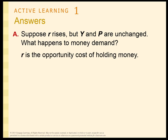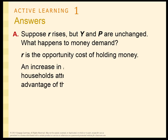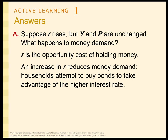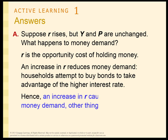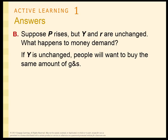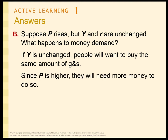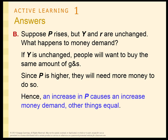If R rises, that's the opportunity cost of holding money. Bonds are paying more money, so households decrease the amount of money they hold and buy more bonds instead. So an increase in R causes a decrease in money demand. And what happens if the price level rises? Real income is unchanged, so people are still buying the same amount of goods and services, but the price tag is higher — they need more dollar bills to buy the same amount. So an increase in P causes an increase in money demand.